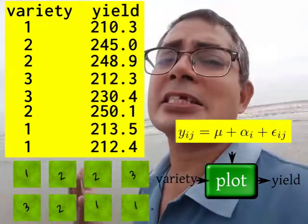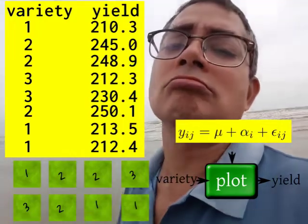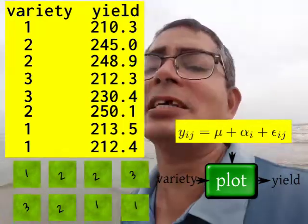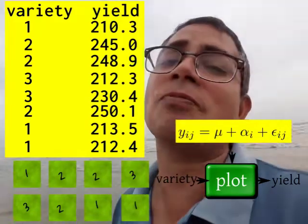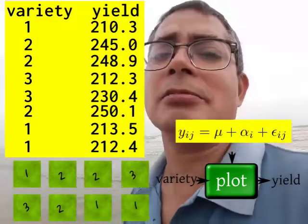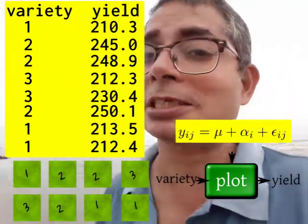In this case, suppose I say mu, I just add 10 to mu and I subtract 10 from each of the alpha_i. Then still all the mu plus alpha_i will remain the same. So mu and alpha_i, they are not identifiable from this model.